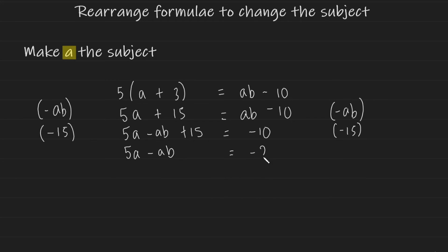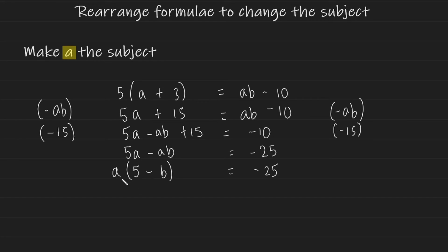Since minus 10 minus 15 is negative 25, we now isolate a by factorizing — taking out the common factor of a, leaving a times (5 minus b) equals negative 25. Think of it as the expression (5 minus b) being multiplied onto a; since it's attached via multiplication, divide both sides by (5 minus b), leaving a equals negative 25 over (5 minus b).